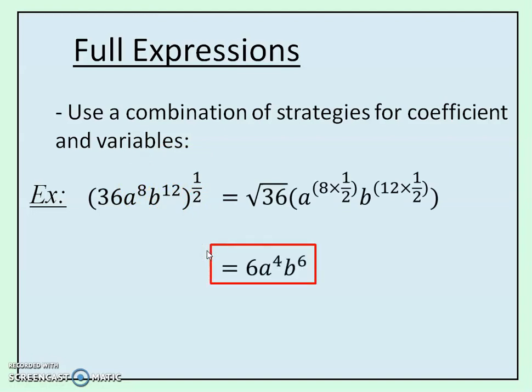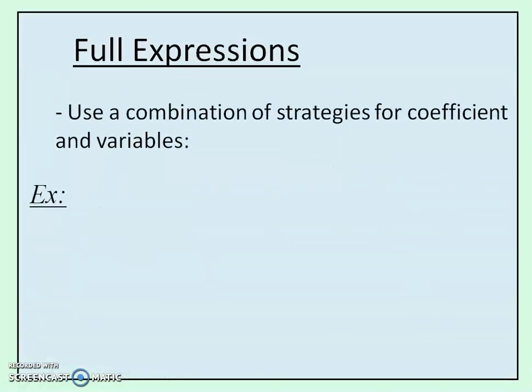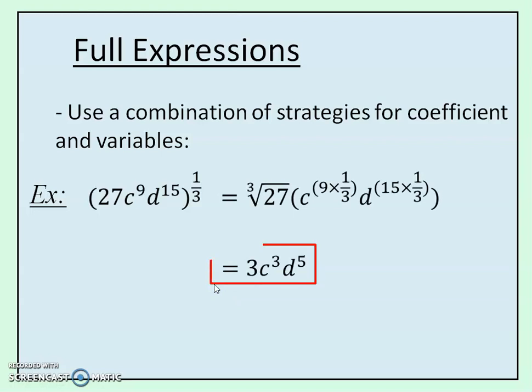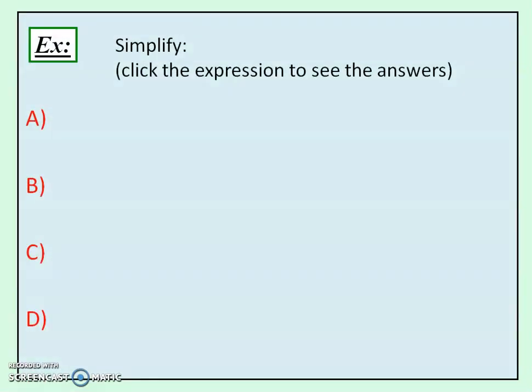And similarly, for an exponent 1 third, it means that I'm taking the cube root of the coefficient, cube root of 27. And for my exponents, I multiply 9 times 1 third and 15 times 1 third. That's how I get this answer. So for these examples here.